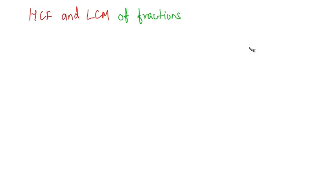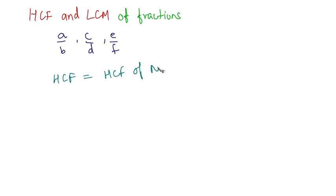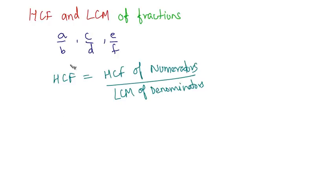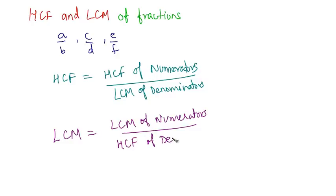Now let's move on to our next topic: how do you find the LCM and HCF of fractions? If you have fractional numbers like A/B, C/D, and E/F, we have formulas for this. HCF of fractions = HCF of numerators divided by LCM of denominators. LCM of fractions = LCM of numerators divided by HCF of denominators.